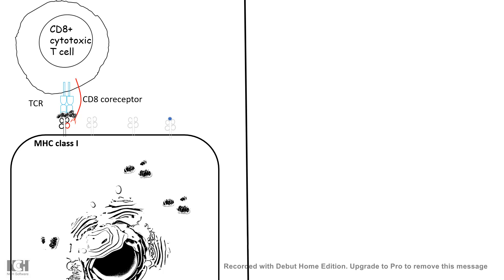Class 1 MHC mostly presents self-antigens, signaling the immune system not to attack the cell. But in the case of a pathogenic attack, such as a viral infection, it would also display viral antigens along with the cell's own self-antigens to CD8-positive cytotoxic T cells.